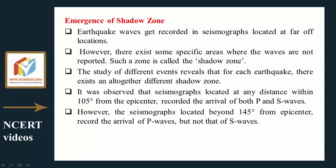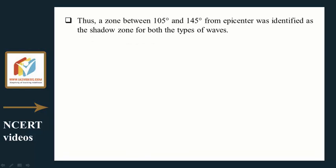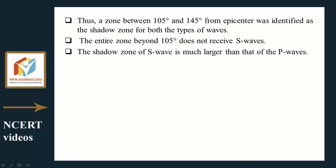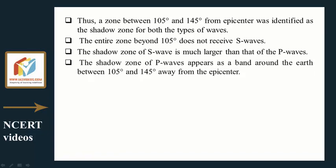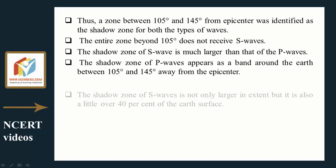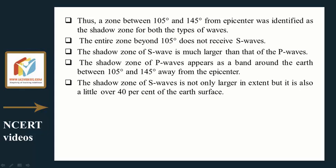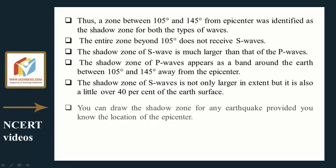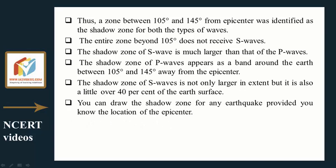Seismographs located beyond 145 degrees from the epicenter record the arrival of P waves but not S waves. Thus, a zone between 105 degrees and 145 degrees from the epicenter was identified as the shadow zone for both types of waves. The entire zone beyond 105 degrees does not receive S waves. The shadow zone of S waves is larger — it covers a little over 40 percent of the earth's surface. The shadow zone of P waves appears as a band between 105 and 145 degrees from the epicenter.